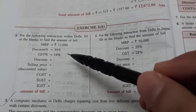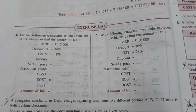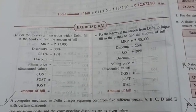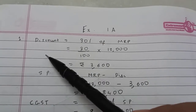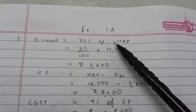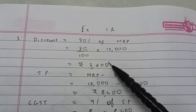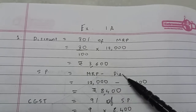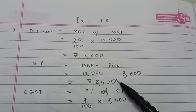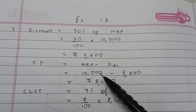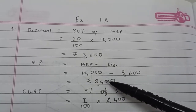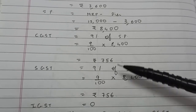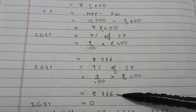Let's start with exercise 1A, the first sum. The MRP, discount percent, and tax percent are given. The discount is 30% of the MRP, which comes to ₹3,600. The sale price is MRP minus discount, which comes to ₹8,400. The GST is 18%, so the Central GST will be 9% and the State GST will also be 9%, giving ₹756 each. IGST is zero because the transaction happened within Delhi — it is an intrastate transaction.